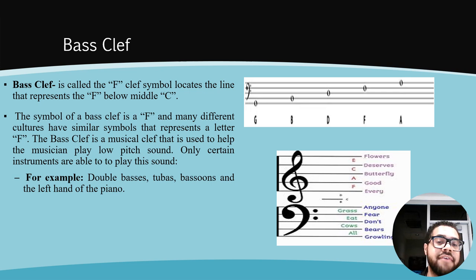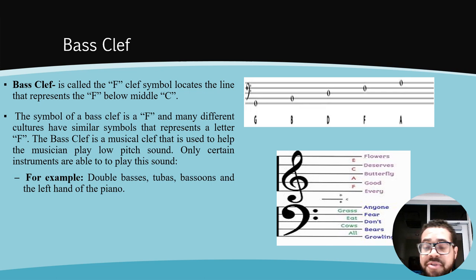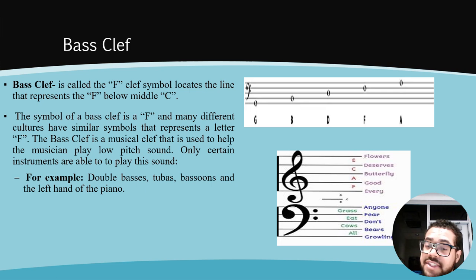The bass clef is called the F clef, and its symbol locates the line that represents the F below middle C. The symbol of the bass clef is an F, and many different cultures have similar symbols representing the letter F. The bass clef is used to help musicians play low-pitched sounds, and only certain instruments use it — for example, double basses, tubas, bassoons, and the left hand of the piano. As you can see on the top right, you can see where the F is on the bass clef as part of the music staff. Additional symbols and lettering help musicians remember which symbol and letter to use to create music.